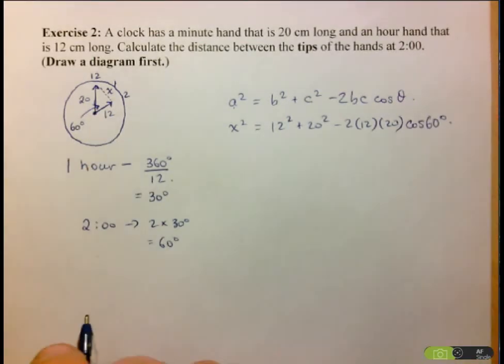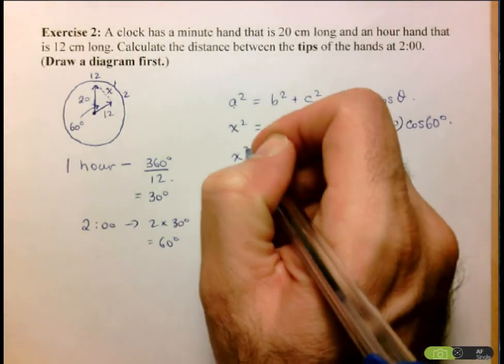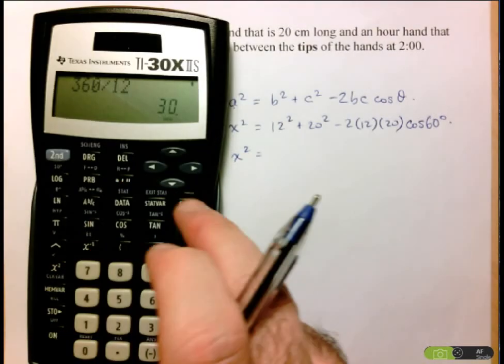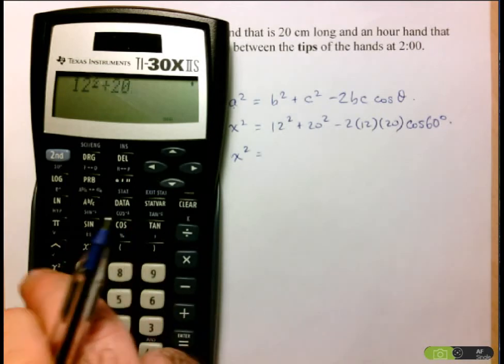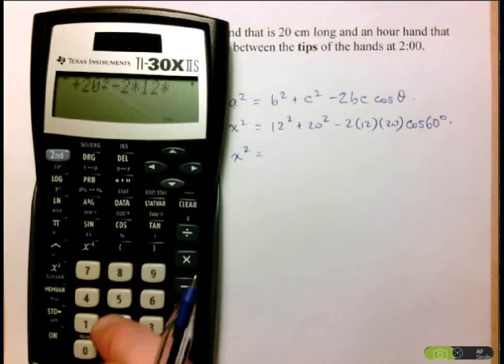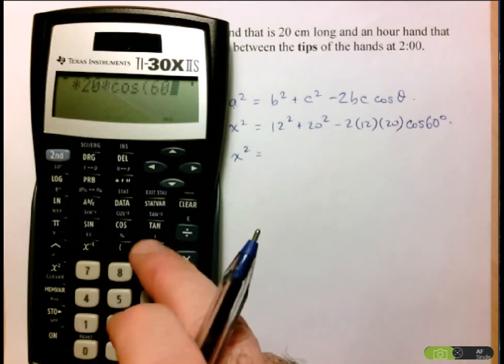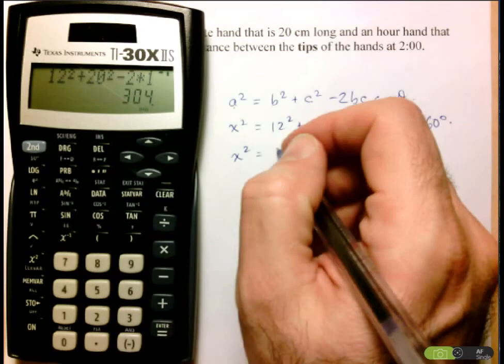So here this is good because on the right-hand side, it's all filled in with numbers. So I can just calculate that. So let's do that here. Make sure we input it into the calculator correctly. So here we have 12 squared plus 20 squared minus 2 times 12 times 20 times cos of 60 degrees equals, and we've got 304.